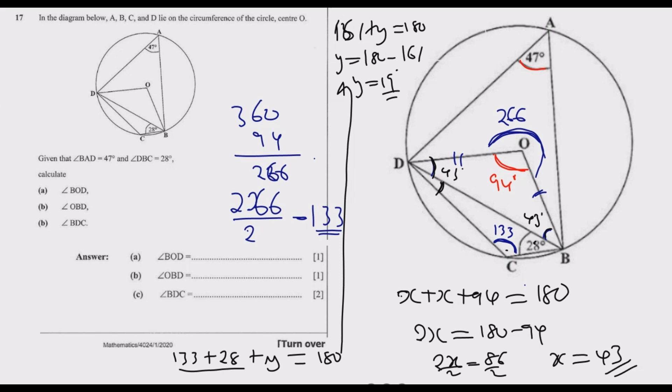Let us look at the questions. Find BOD: that angle is 94, we already found it. Find OBD: we found this angle to be 43. Remember, we used the fact that two sides are equal, which are radii, so these two angles should be the same. Find angle BDC: we found this angle to be 19 degrees, using the fact that this angle is half the angle at the center, and when you add 28 plus this angle plus BDC, it should give us 180. This is how you get the four marks on question 17.